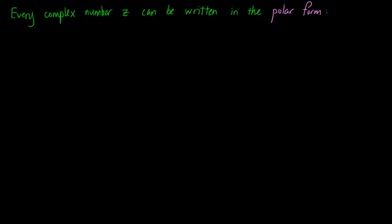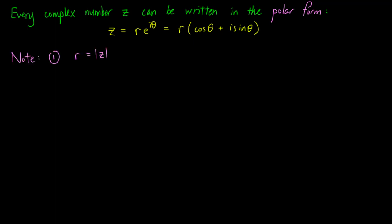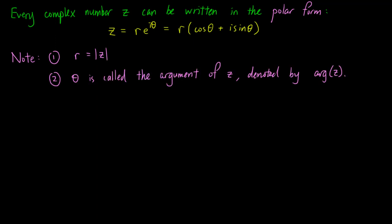For a general complex number, we can write it in the so-called polar form: z equals r times (cos θ + i sin θ), which is the expression we had before. Note that r is the absolute value of z, and θ is called the argument of z, denoted by arg(z).